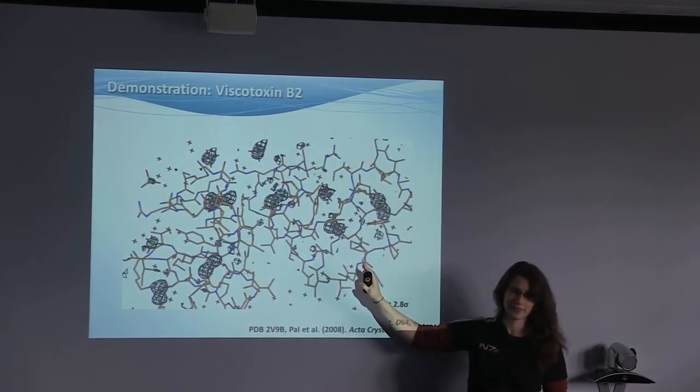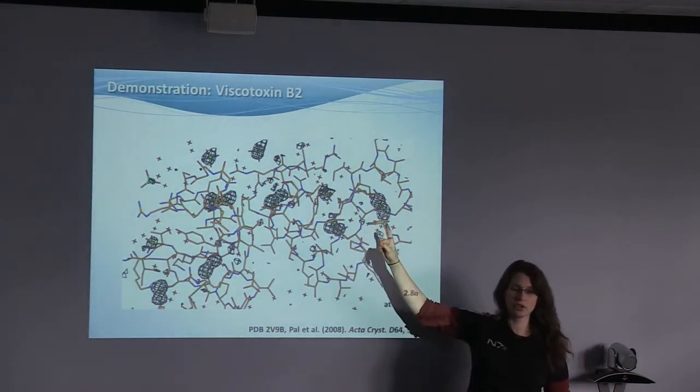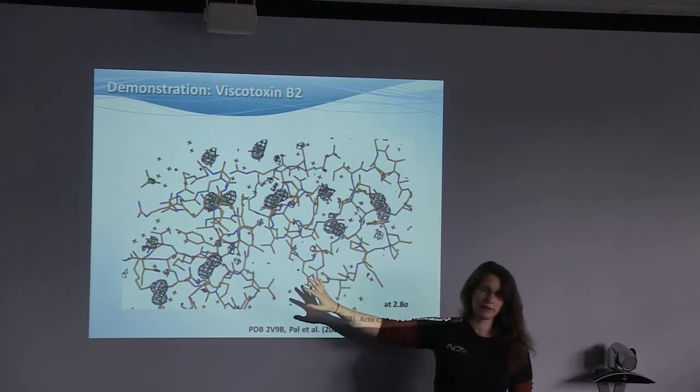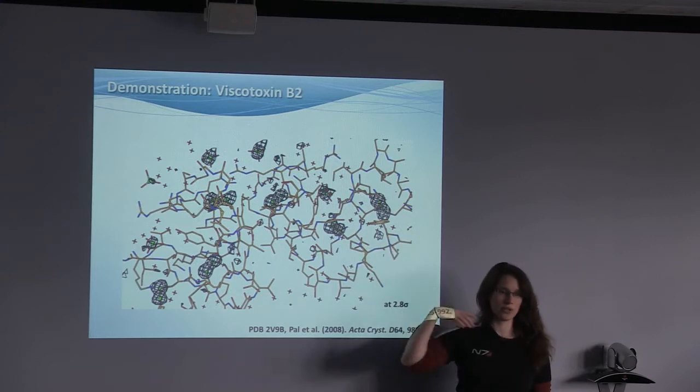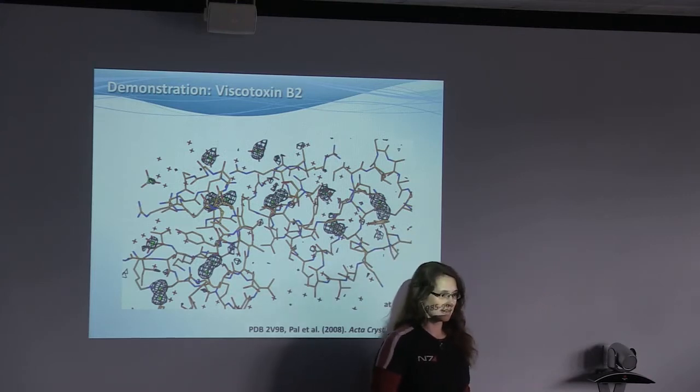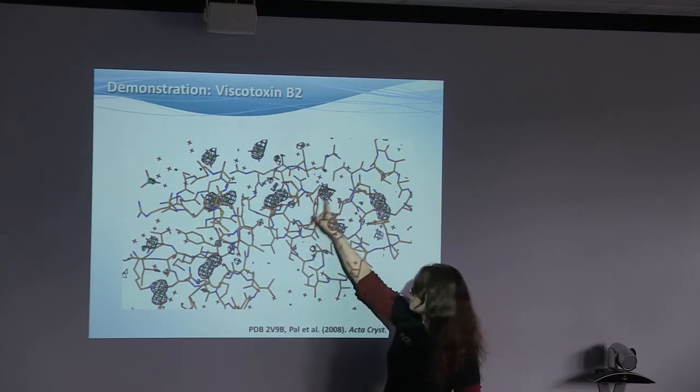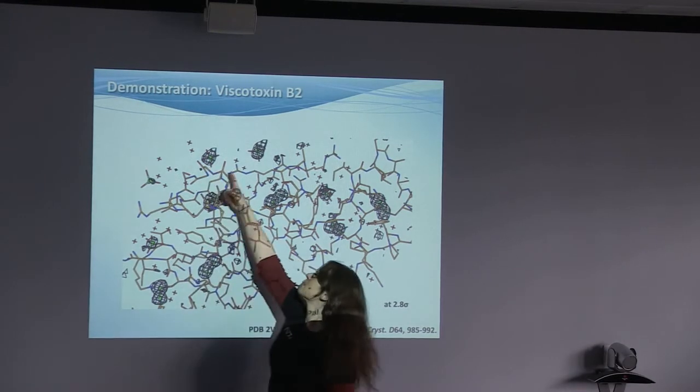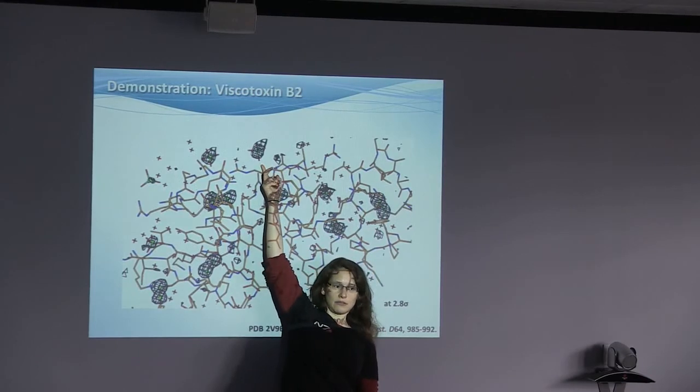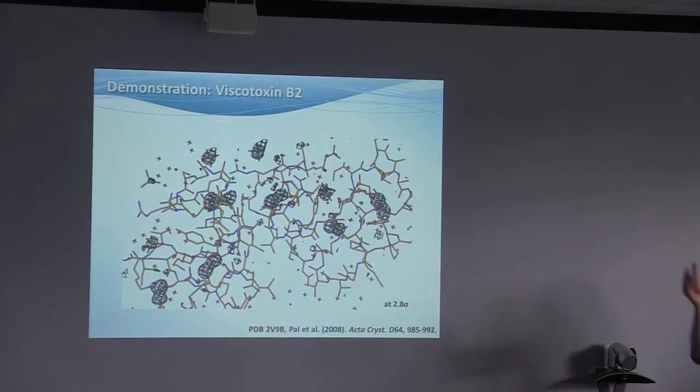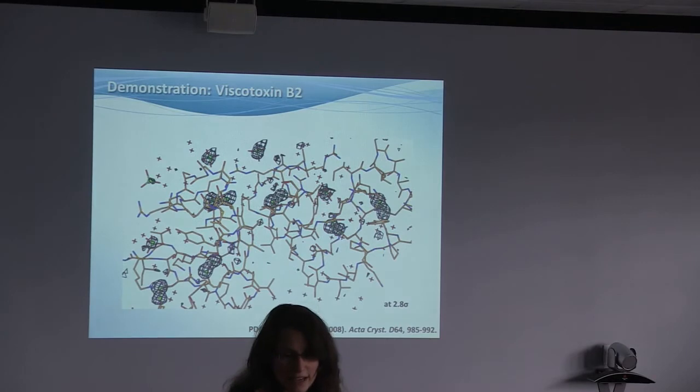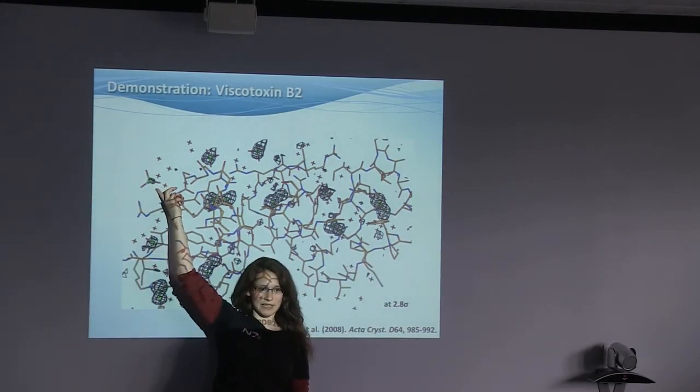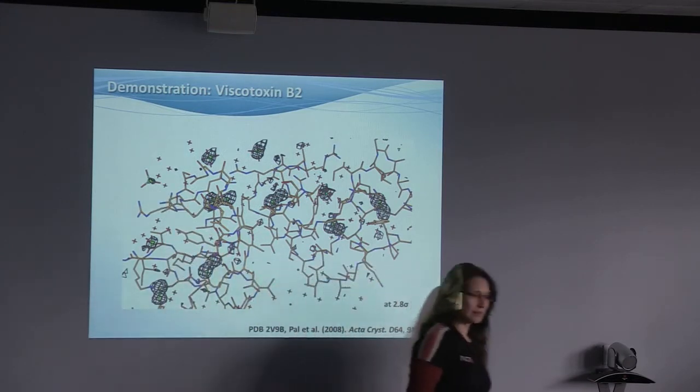Now, this is what it looks like. This is viscotoxin B2, not to confuse with A1, because B2 couldn't be solved by SAD phasing. Still, when you take the SAD data and you generate the anomalous map, it becomes very evident that all the peaks were there. So the information was in the data. We just could not exploit it well enough to solve the structure. You can see all the disulfide bridges here. You can see atoms here. Anyone an idea what that is? Yes, sulfate. But there's one sulfate which is kind of not having such a high peak in this map. What would be a potential explanation?